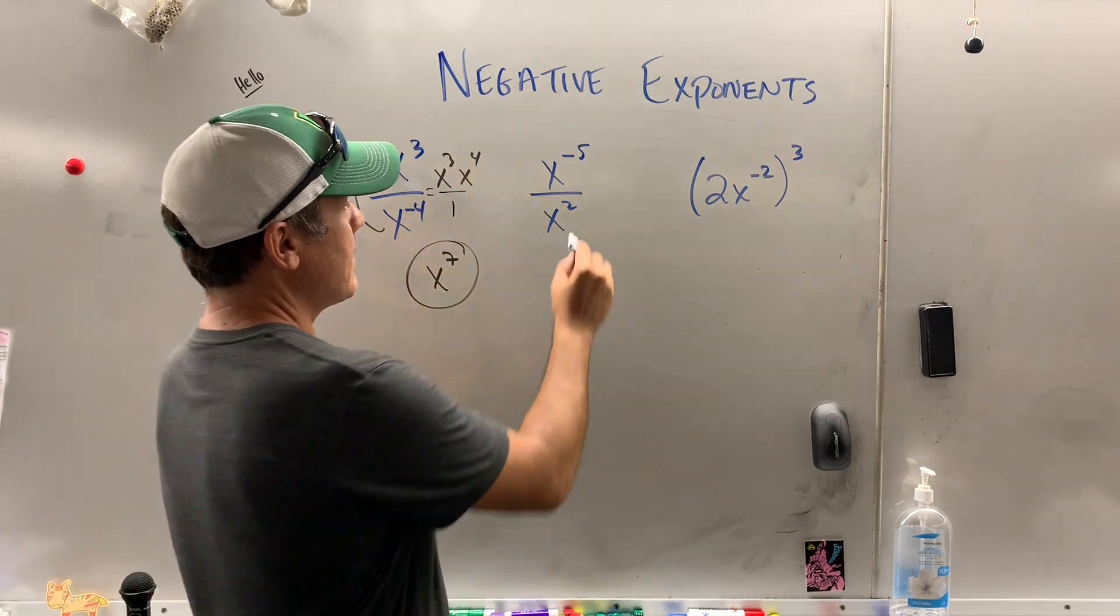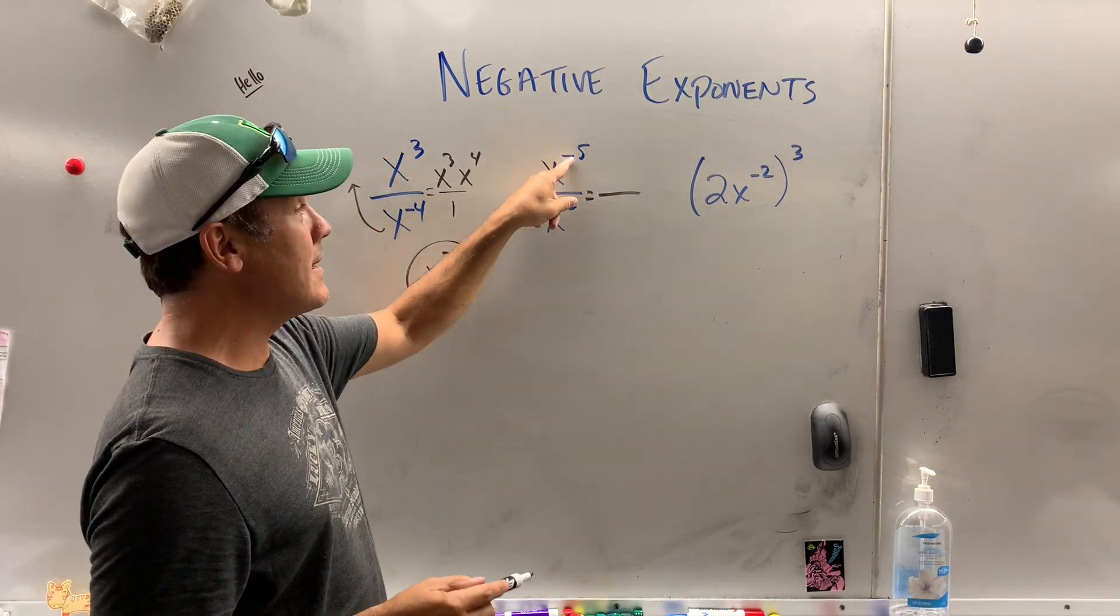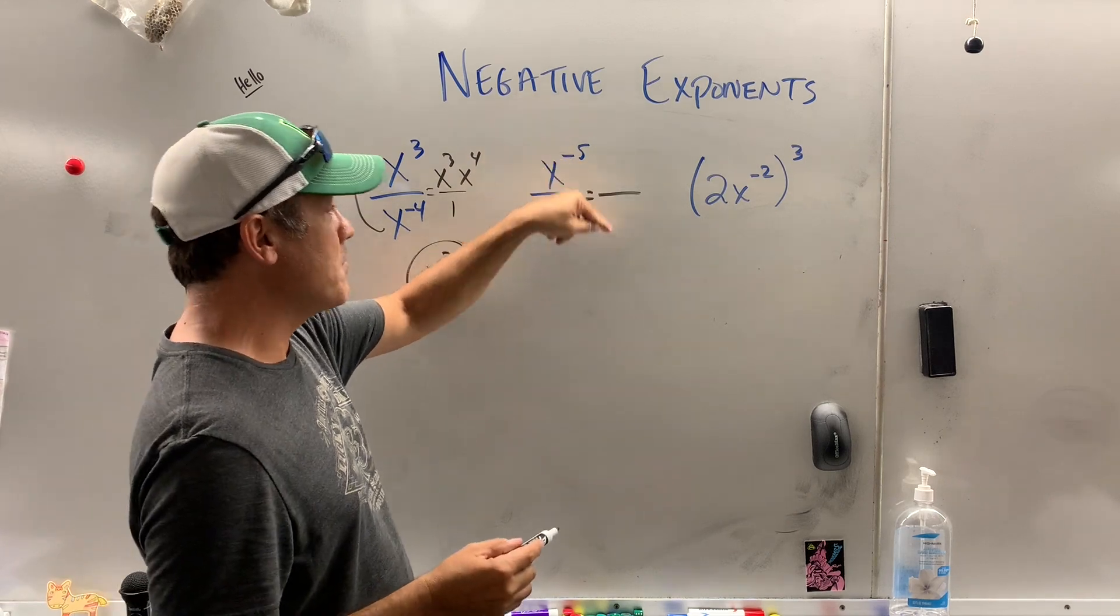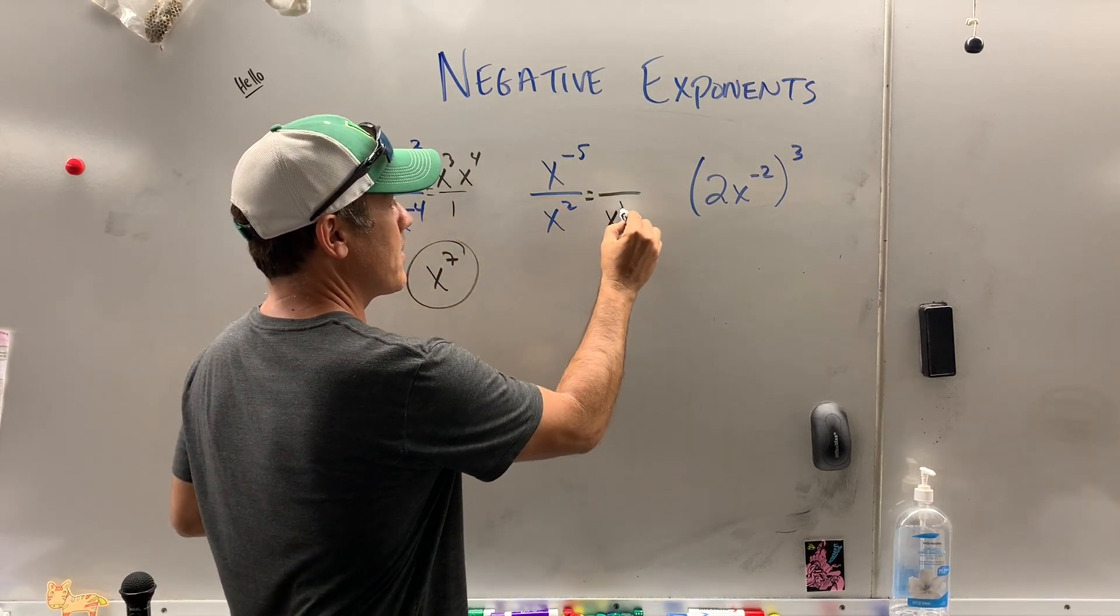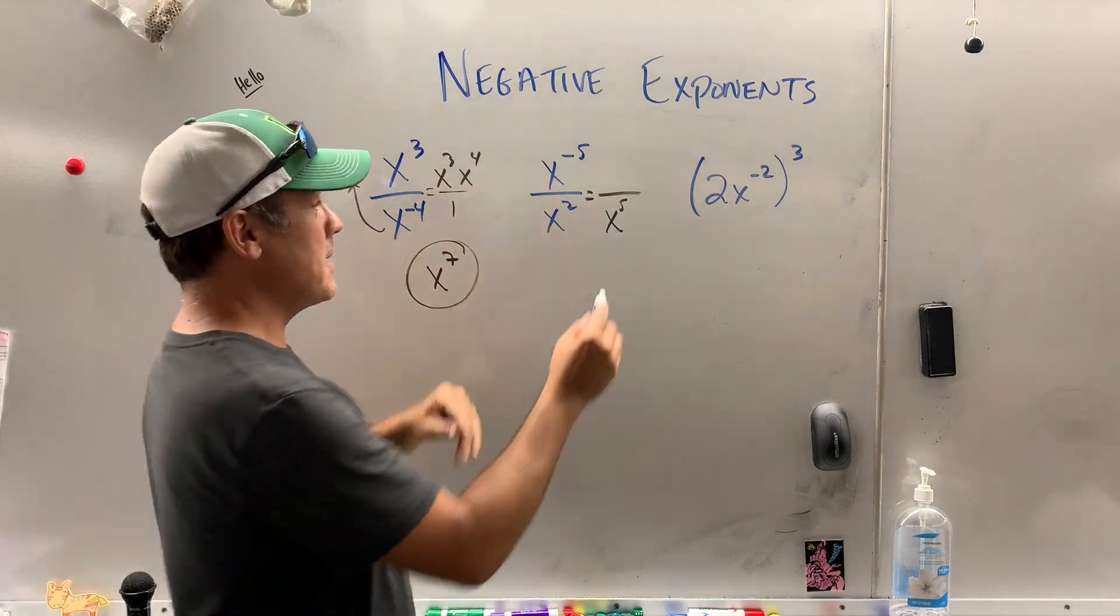Over here, this guy, he's upstairs, he's being negative. See, he's got a negative exponent, he's moving downstairs till he stays as x. This guy, x squared, he's downstairs being positive, leave him down there.